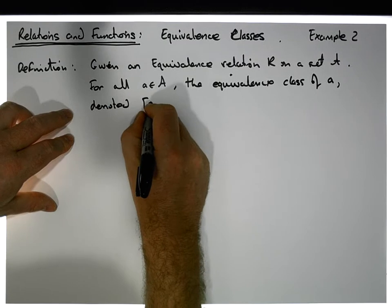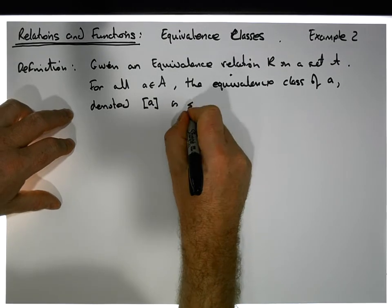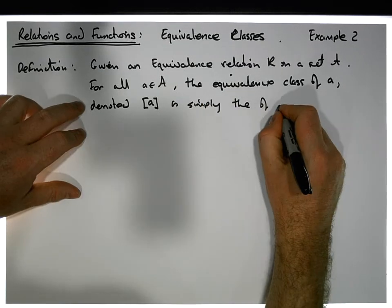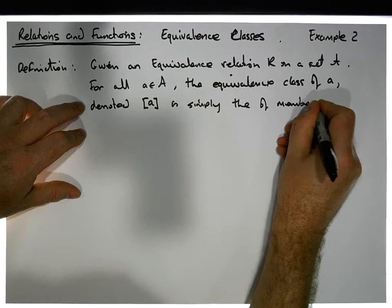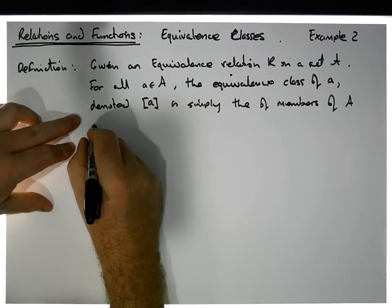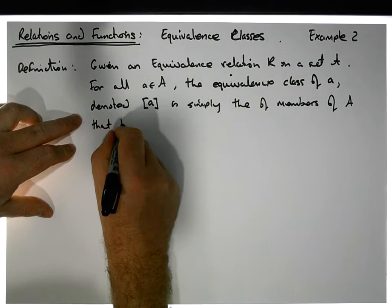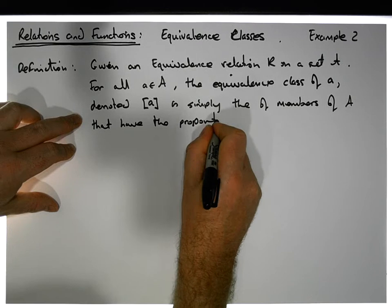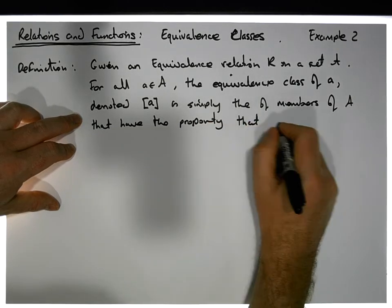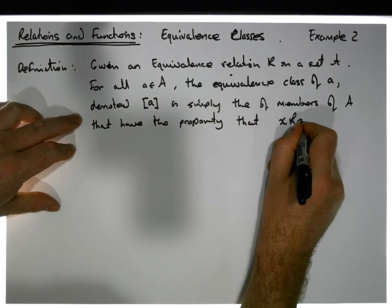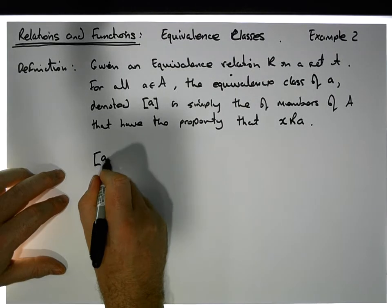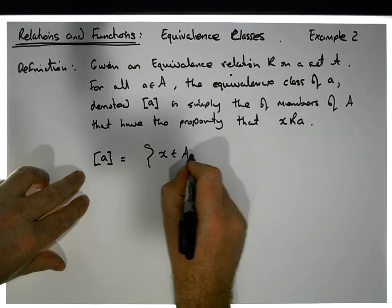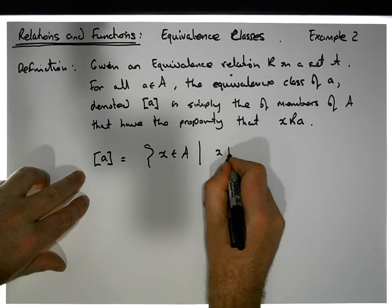property that x is related to A. So really what we're saying is that the equivalence class A is simply equal to the set of x's that are in A, such that the x is related to A.